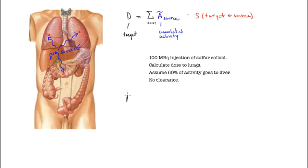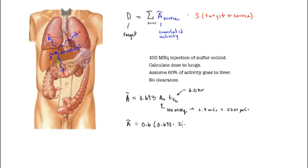First, we start with the accumulated activity using that formula: 0.693 times the initial activity times the half-life. This initial activity is 100 megabecquerels, which is also 2.7 millicuries or 2700 microcuries. I write that because the tables are in microcuries. The half-life is technetium's half-life, which is 6.0 hours. The accumulated activity turns out to be all these factors multiplied together, and the units are microcurie-hours.